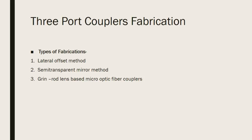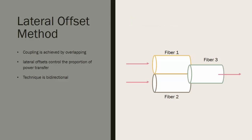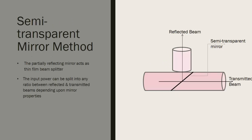In the lateral offset method, the coupling region is obtained by overlapping the three fibers on each other. The lateral offset controls the proportion of power transfer — that is, what proportion of the input signal enters the output fiber depends on the extent to which they are overlapped on the main fiber. This is a bidirectional technique, meaning the operation can be reversed.